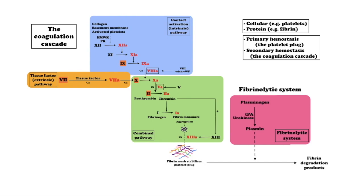Secondary hemostasis occurs simultaneously with primary hemostasis, but generally finishes after it. The coagulation cascade is classically divided into three pathways: the contact pathway, also known as the intrinsic pathway; the tissue factor pathway, also known as the extrinsic pathway; and the common pathway.